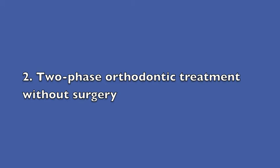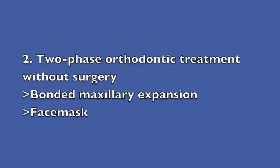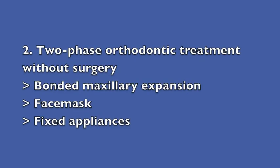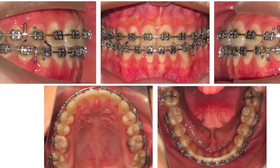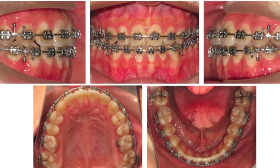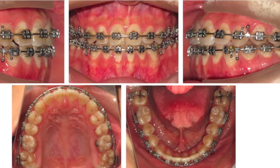Option number two: two-phase orthodontic treatment from the beginning, with the goal being to treat the patient non-surgically. This would require use of a bonded maxillary expansion appliance combined with early maxillary protraction using a face mask. Following expansion, fixed appliances will be placed to increase maxillary arch length in an attempt to create enough space for all remaining permanent teeth to erupt. Fixed appliances on the mandibular arch would eventually be required to increase lingual root torque combined with class 3 elastics to gradually upright those incisors.